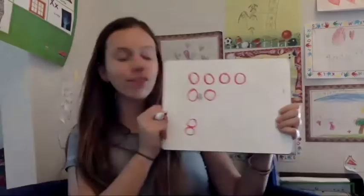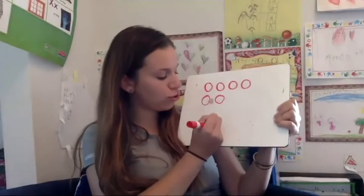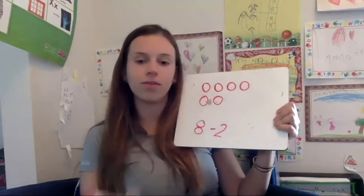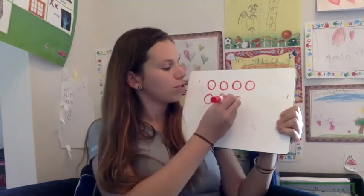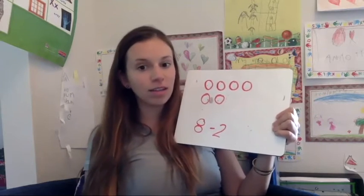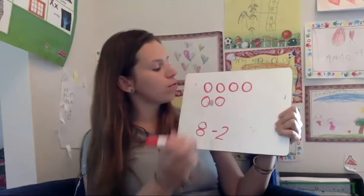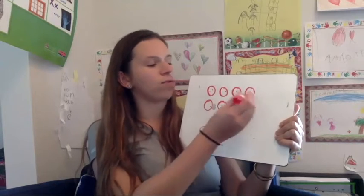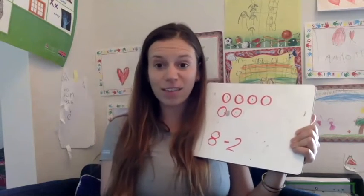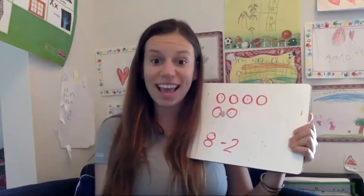That's right, I erased two dots — minus two. Maybe you know because you saw the missing dots, you saw that those two dots weren't in their spots. Or maybe you knew because we had eight and now we have only six, and the difference between eight and six is two.